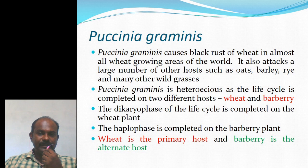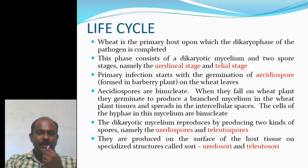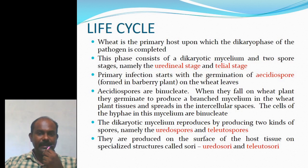The dikaryophase of the life cycle is completed on the wheat plant whereas the haplophase is completed on the Barberry plant. Wheat is the primary host and Barberry is the alternate host. The dikaryophase on wheat consists of a dikaryotic mycelium and two spore stages: the uredinal stage and the telial stage. Primary infection starts with the germination of aeciospores which are formed in the Barberry plant, and the infection starts with the germination of these aeciospores on wheat leaves.